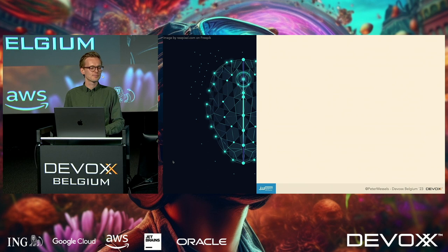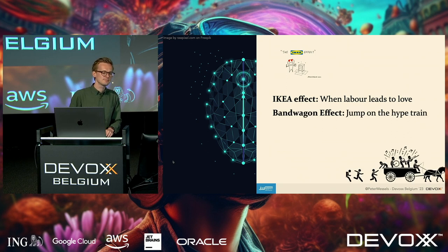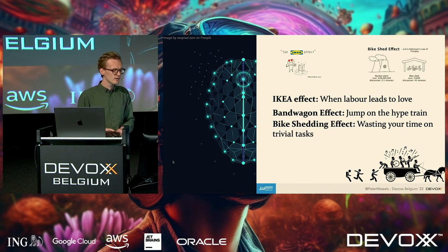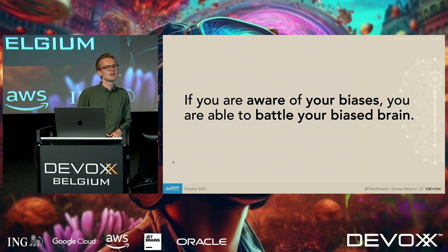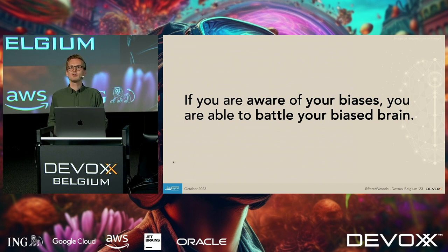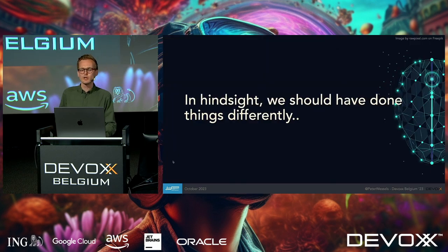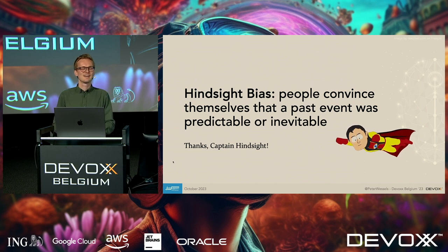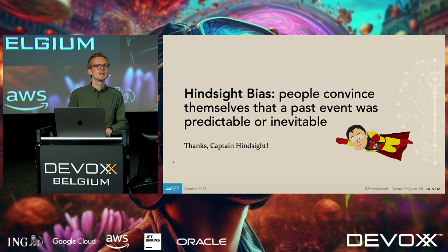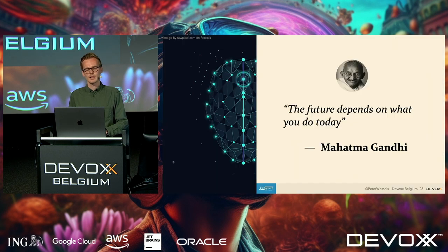To sum up: we've seen the IKEA effect — when labor leads to love. We've seen the bandwagon effect — when we jump on hype trains. And we've seen the bike-shedding effect — wasting time on trivial matters. If you are aware of your biases, you are able to battle them. And if you're now thinking 'I made all these mistakes, and in hindsight we should have done things differently,' you might be subject to another bias called the hindsight bias — where people convince themselves that something that happened was predictable and inevitable. So thank Captain Hindsight for that. That leaves me with the last quote from Mahatma Gandhi: 'The future depends on what you do today.'